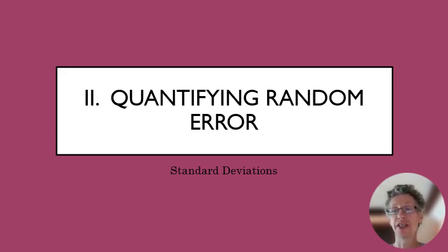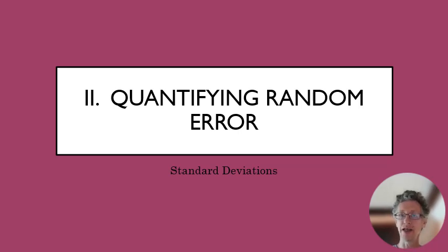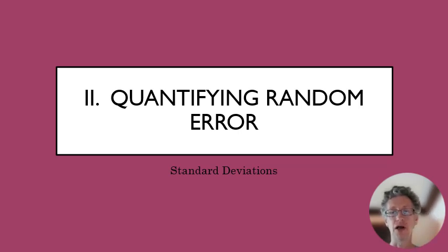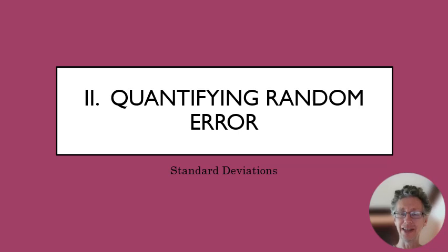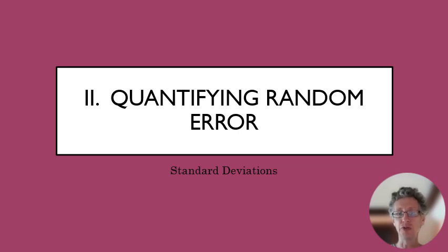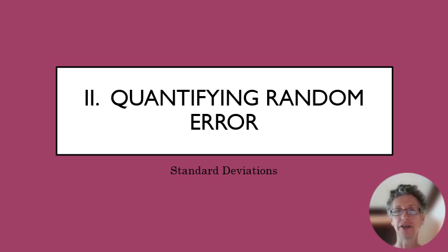Last time we talked about using Gaussian curves to describe the probability density function for our data. In other words, we found a way to take something that's random and use our experimental knowledge to turn that into a mathematical expression. Now we'll see how to use that mathematical expression to give us a better sense of what our uncertainties are.